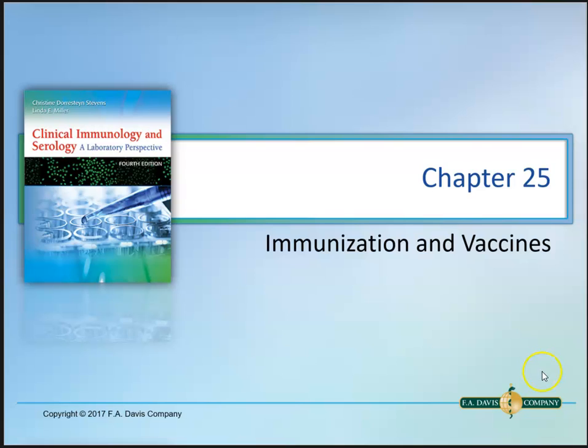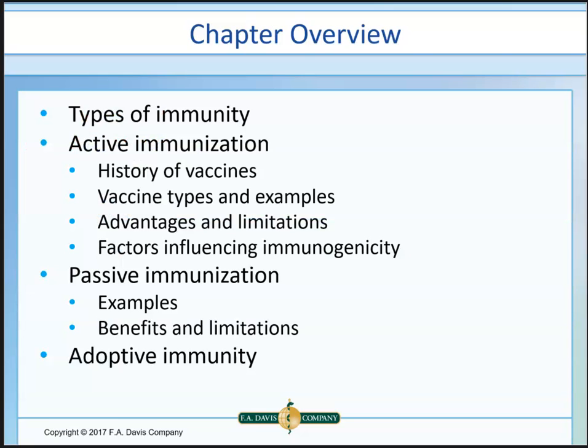Chapter 25: Immunization and Vaccines. We'll cover the different types of immunity involved in immunization and vaccinations — active immunization with its history, types, examples, advantages, disadvantages, and limitations, as well as the factors that influence immunogenicity. We'll also discuss passive immunizations, examples, benefits and limitations, and what adoptive immunity is.